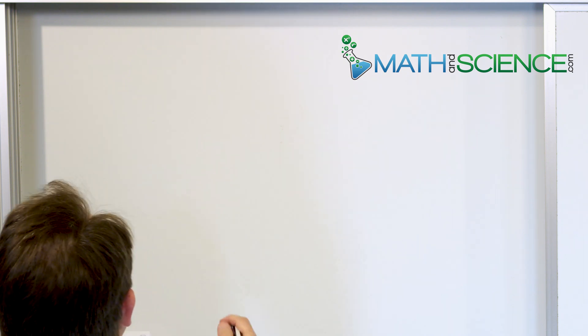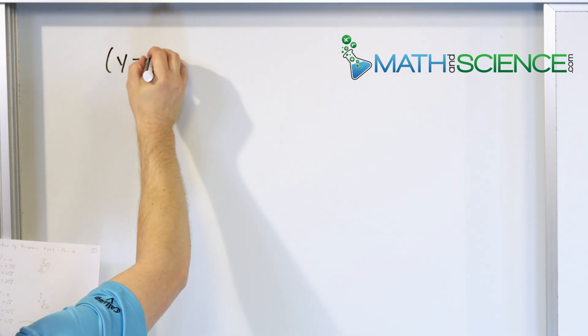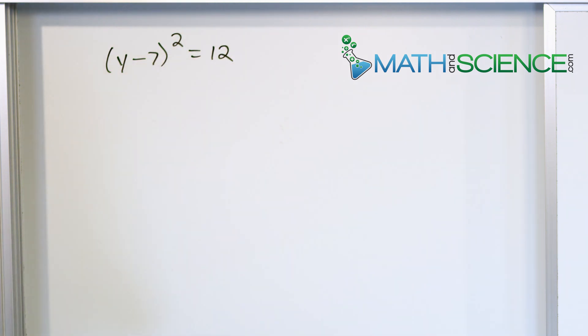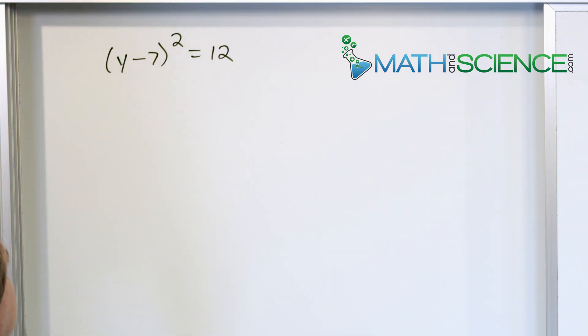And so what we have is an example, just continuing on down the line, is an equation like this: y minus 7 quantity squared is equal to 12. Now you can see how easy it is to solve this because I can reveal the variable by just taking the square root of both sides. If I take the square root of the left, it'll cancel with the squaring term, leaving y minus 7.